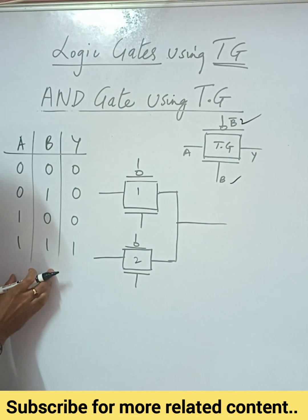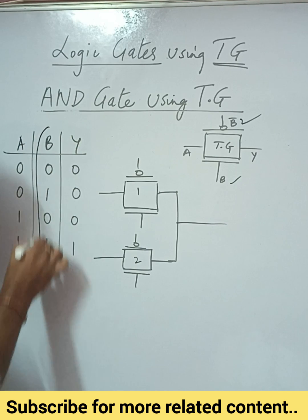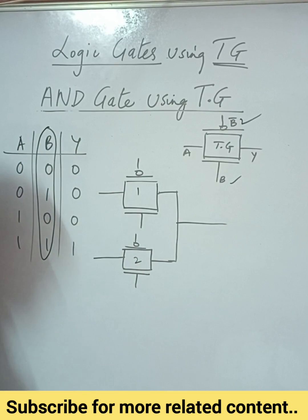You have to take the control signal from your inputs, from the truth table. It can be either a or b. Now in this case we are using b as the control signal and designing the transmission gate. You can use a also, and accordingly your transmission gate design will be changed.